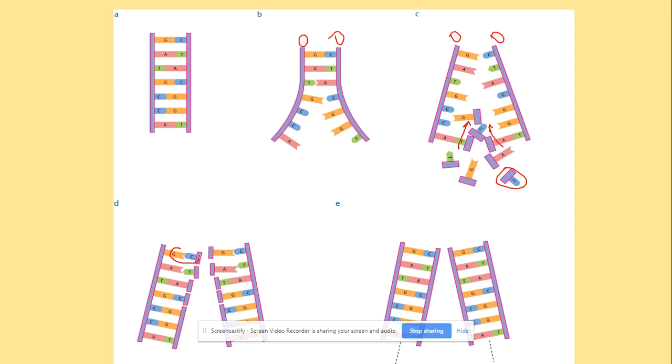Remember, guanine always binds with cytosine and adenine with thymine. This addition of nucleotides is catalyzed by DNA polymerase, which makes the phosphodiester bond, the sugar phosphate backbone.